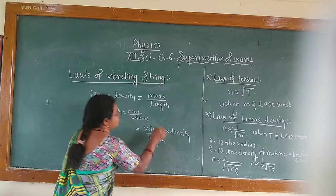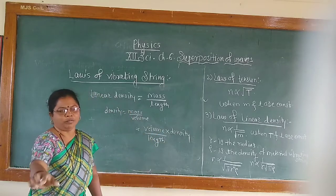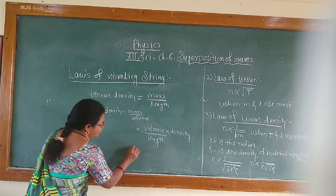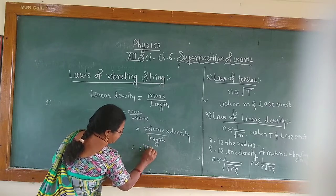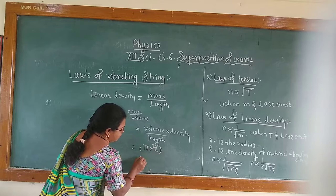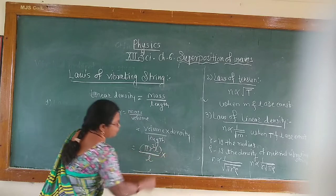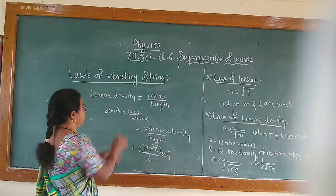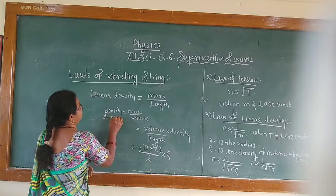So what's the value of volume? Volume is pi R squared L divided by L, into density is equal to rho, density of material of the material.